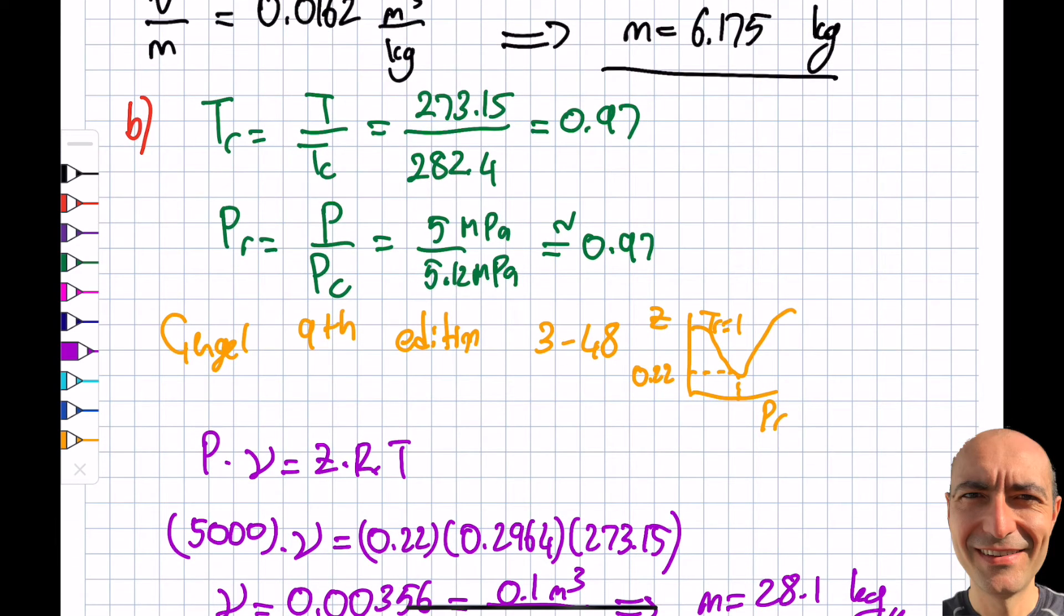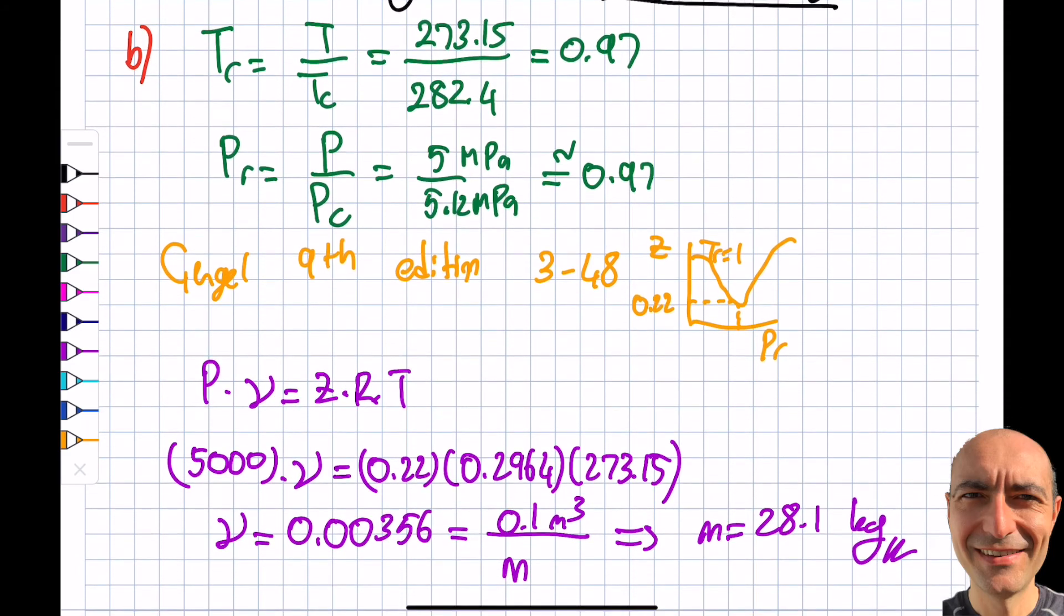If you do an approximation for the ideal gas, you get six kilograms, so your error doesn't come as a surprise—it's 1 minus 0.22, which is a 78 percent error. The point we're making is you really need to know what you're doing.